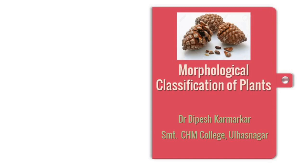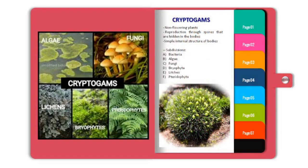In this presentation, we are going to talk about morphological classification of plants. On the basis of morphology, plants can be classified as cryptogames or phanerogames. Cryptogames are non-flowering plants, i.e. they reproduce through spores that are hidden in the bodies. They have very simple internal structure.